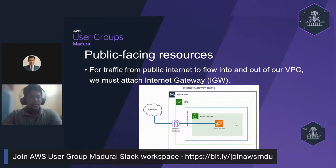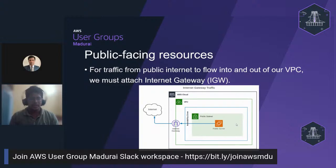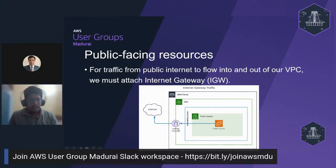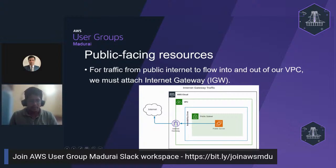Subnets control whether resources are publicly or privately available. For traffic from the public internet to flow into and out of your VPC, you must attach an internet gateway. The internet gateway is like a doorman standing in front of the door — any data flowing from your resources to the internet or from the internet to the VPC must pass through the internet gateway.